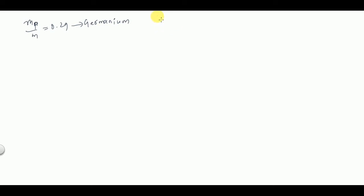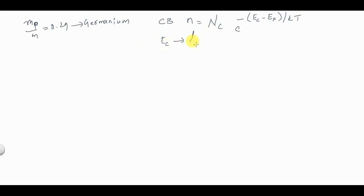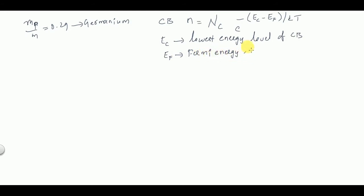Now we will discuss the equation for the concentration of electrons in the conduction band. In an n-type semiconductor, electrons are the majority carriers. The concentration of electrons is given by n = NC × exp(−(EC − EF) / kT), where EC is the lowest energy level of the conduction band, EF is the Fermi energy level, k is the Boltzmann constant, and T is the temperature in Kelvin.